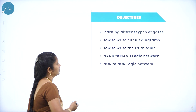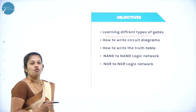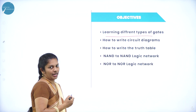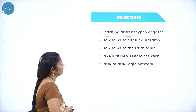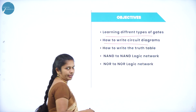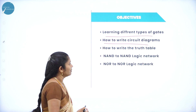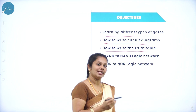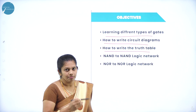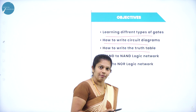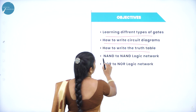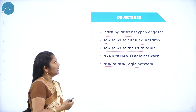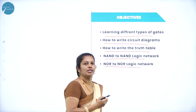When we come to the objectives of this chapter, we will learn different types of gates — basic gates and derived gates — and what sub-gates fall under each. You will learn how to write the circuit diagram and truth table for each gate. Additional objectives include NAND to NAND logic networks as well as NOR to NOR logic networks.